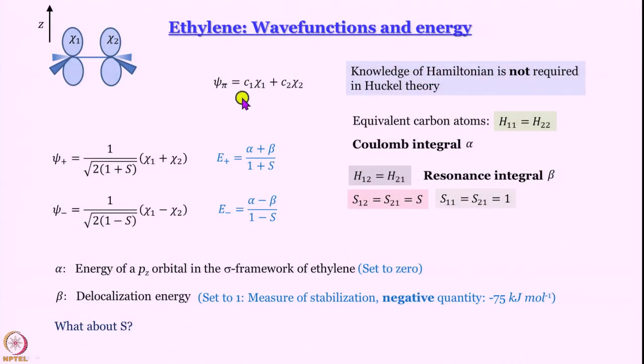Just a small recap: in ethylene we have worked out wave functions and energy. We had expressed the molecular orbital, the pi molecular orbital, as a linear combination of the two p orbitals on the two carbon atoms. Psi plus, the bonding orbital, was 1 divided by root over 2 into 1 plus S multiplied by chi 1 plus chi 2, and psi minus, the antibonding orbital, turned out to be 1 divided by root over 2 into 1 minus S multiplied by chi 1 minus chi 2.